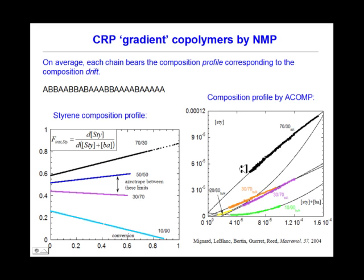The next type — gradient copolymer — studied by AECOM was produced by nitroxide-mediated polymerization, with styrene and butylacrylate. What we show here is instantaneous fraction of styrene versus conversion for reactions done with different initial compositions. This allows us to get the composition profile for the same reactions.